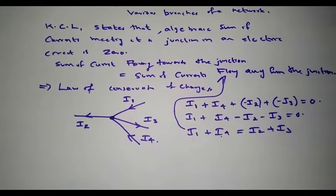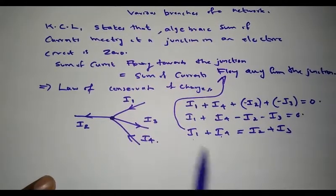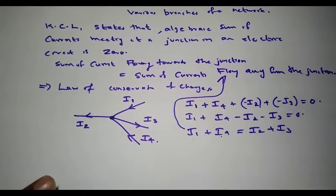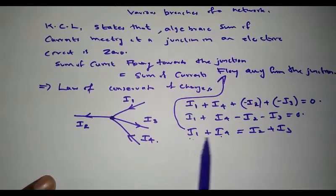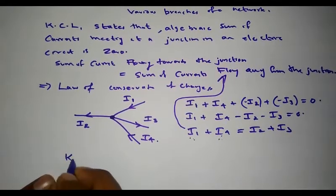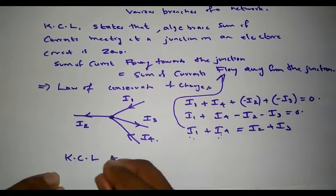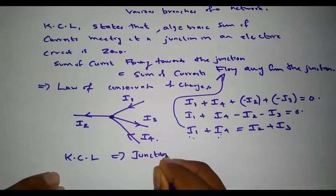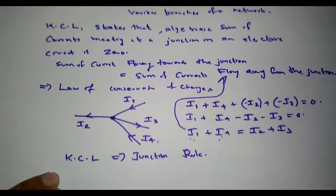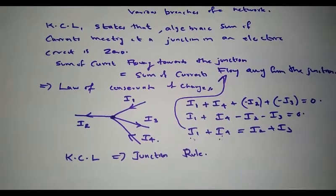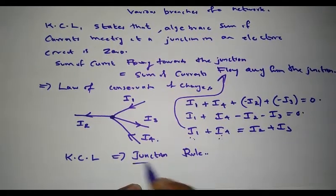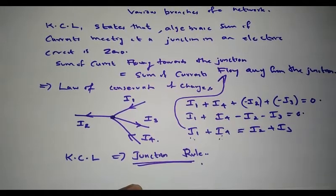So this is the basic idea for Kirchhoff's current law. I1 and I4 are flowing towards the junction, and I2 and I3 are flowing away from the junction. Therefore, from this example, we can conclude that the sum of incoming currents is equal to the sum of outgoing currents. Kirchhoff's current law is also known as the junction rule, because it specifies a method to calculate the currents flowing through a junction of an electrical circuit. This is the basics of Kirchhoff's current law.